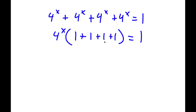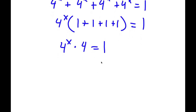Now, if I simplify inside the parentheses, I get 4 to the power of x times — 1 plus 1 is 2, 2 plus 1 is 3, 3 plus 1 is 4 — so 4 to the power of x times 4 is equal to 1. Now, 1 here is the same thing as 4 to the power of 0. So I have 4 to the power of x times 4 is equal to 4 to the power of 0.